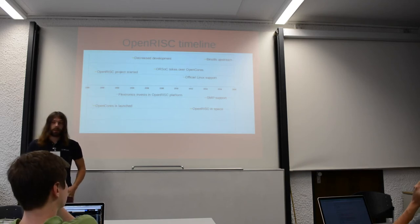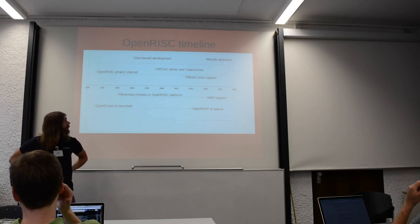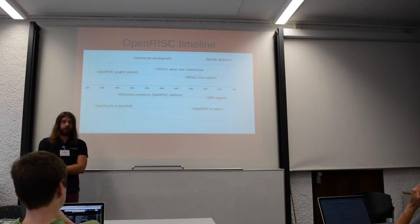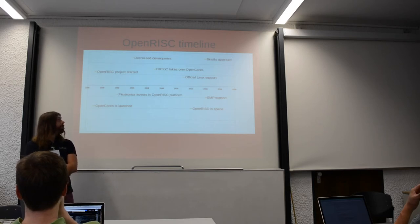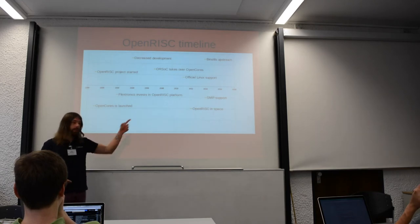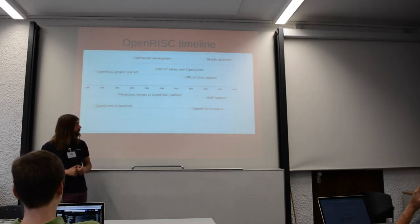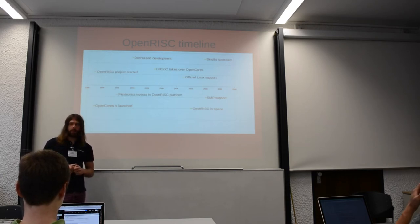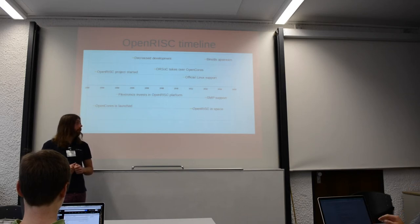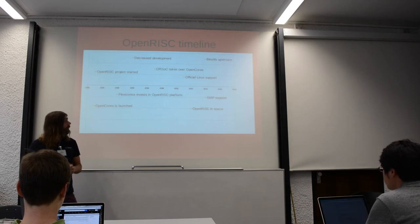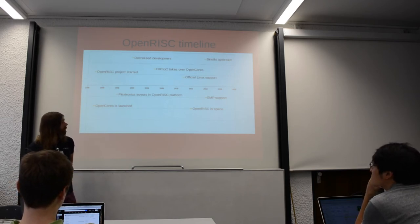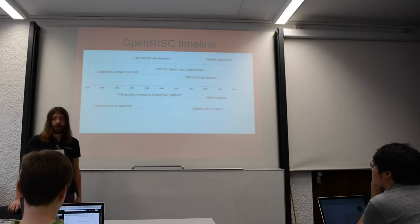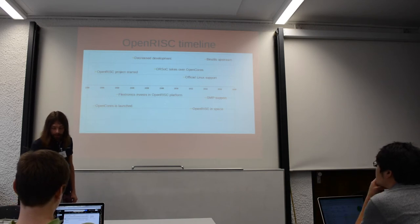In 2007, a Swedish company called Orsox bought OpenCores with the objective of reinvigorating efforts to make OpenRISC better. They started working on improving the OpenCores site, fixing bugs in the OpenRISC platform, and found a few commercial projects — mainly one important one: putting an OpenRISC in space as part of the NASA TechEdSat program. We also got official Linux support since Linux 3.1. Earlier this year, we had GDB details upstreamed and are working on GCC. We also had our first proper SMP — Symmetrical Multi-Processing — support.